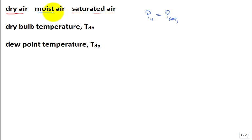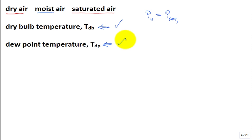Moist air is anywhere in between dry air and saturated air. We had the dry bulb temperature as well as the dew point temperature. If the temperature of the air drops to the dew point or below, water will coalesce into droplets and, under the influence of gravity, settle out. You'll often see dew on the grass, on your cars, on surfaces early in the morning because the temperature of the air dropped overnight and hit the dew point temperature or below.